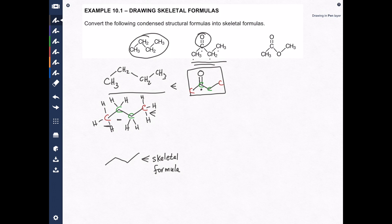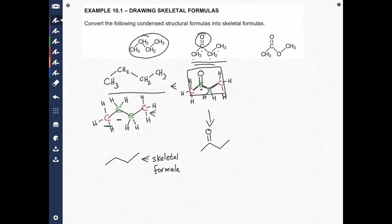Now let's look at the red carbons on the ends. They each have one bond, so they must have four. Let's draw them in: one, two, three — and the bond it already had is four. Let's do the other red carbon — it already has a bond here, two, three, four. Now the green carbon in the middle already has a bond here and a bond there, so it has to have two more bonds. Now, I've taken the nice skeletal drawing and turned it back into an expanded drawing, but that's okay. Let's redraw it — this is also a skeletal formula. Notice the oxygen is shown, but the carbons and the hydrogens are not.